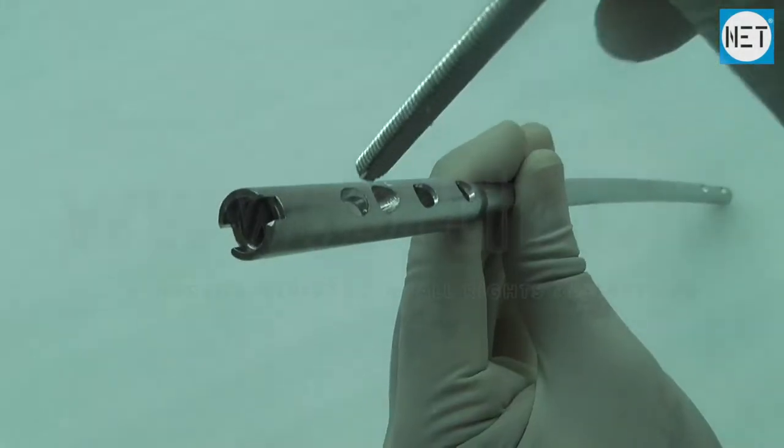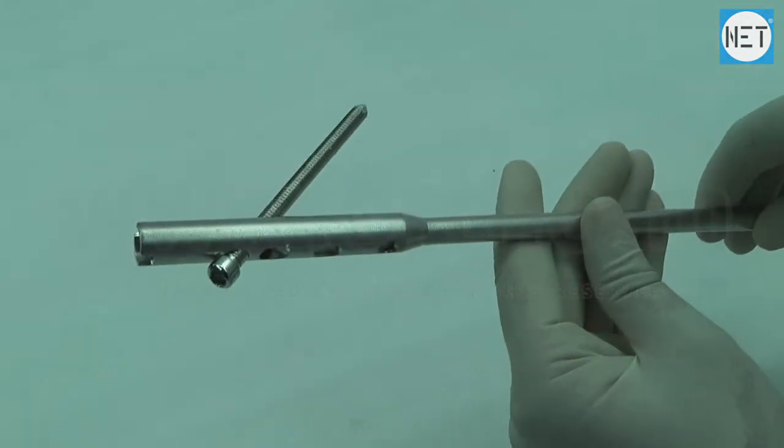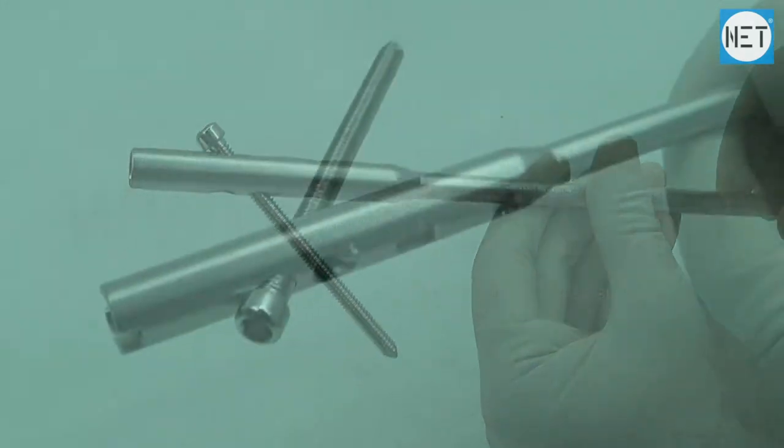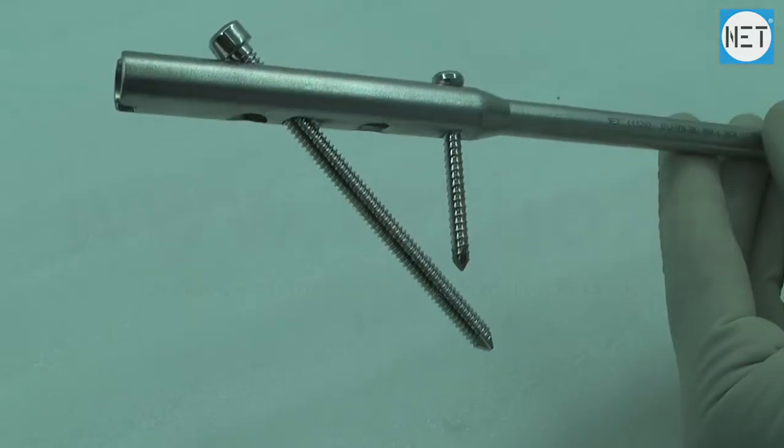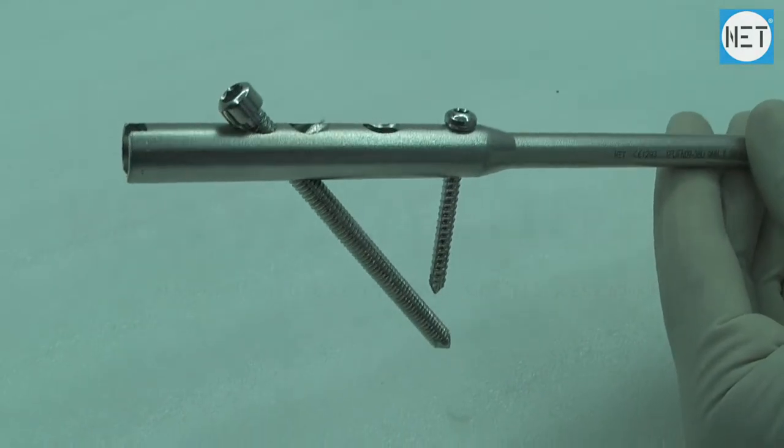The first proximal hole from the top allows 6mm locking bolt and is directed towards the lesser trochanter. The third hole from the top is a dynamic hole and supports 4.5mm locking bolt. The fourth hole from the top is static and supports 4.5mm locking bolt.